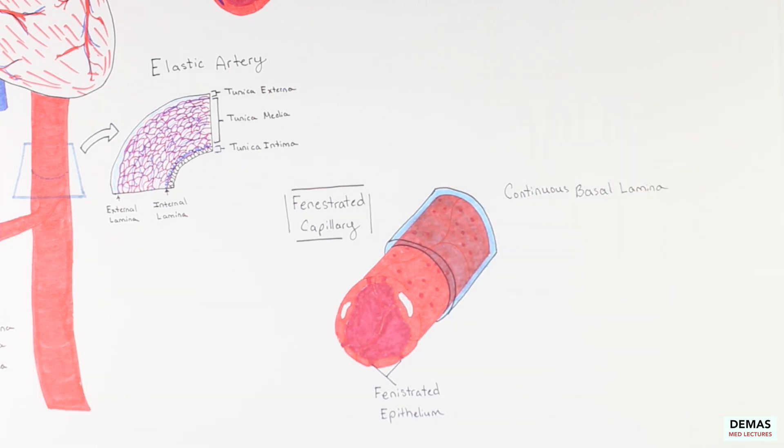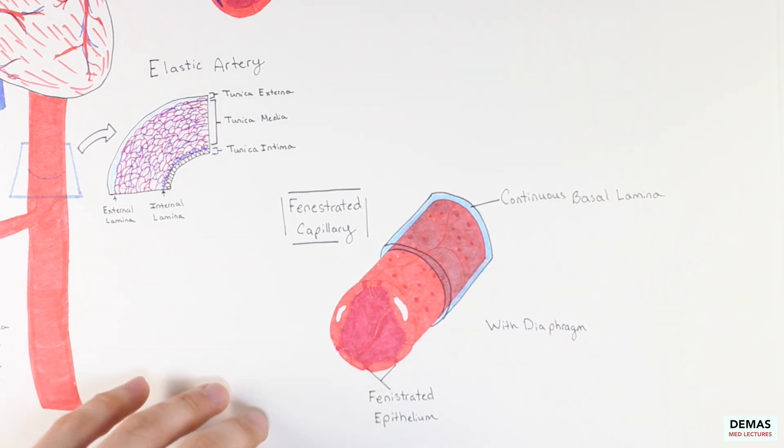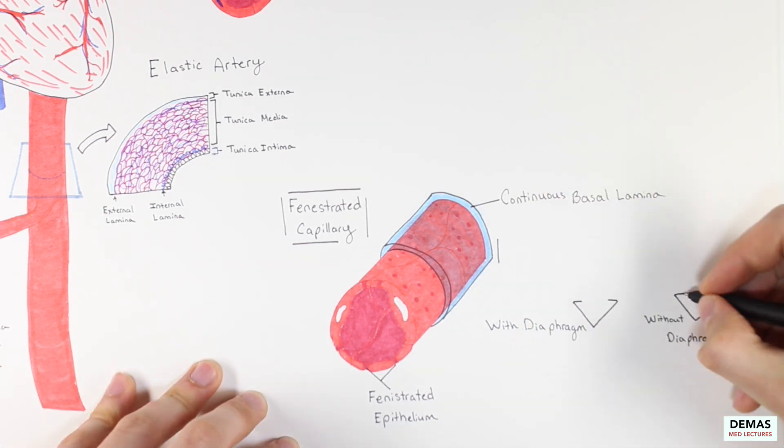These capillaries are found in areas where more rapid exchange of larger, more complex molecules is needed, which is facilitated by the pores in the epithelium. Within the fenestrated capillary category, there are two subtypes, with diaphragms and without diaphragms.